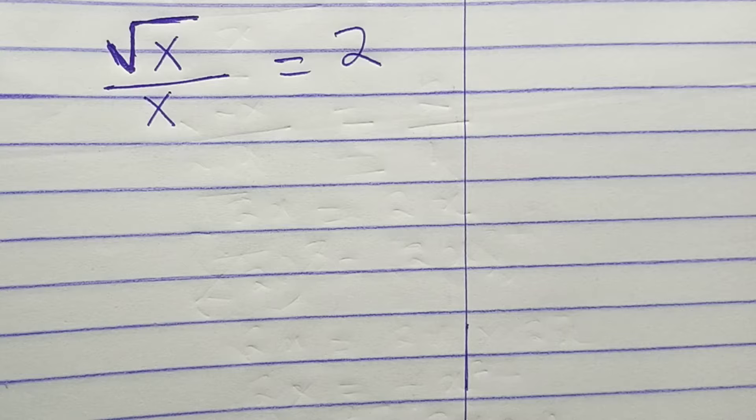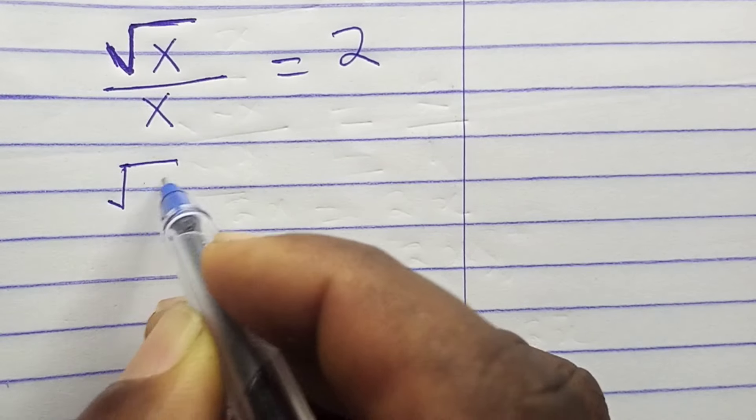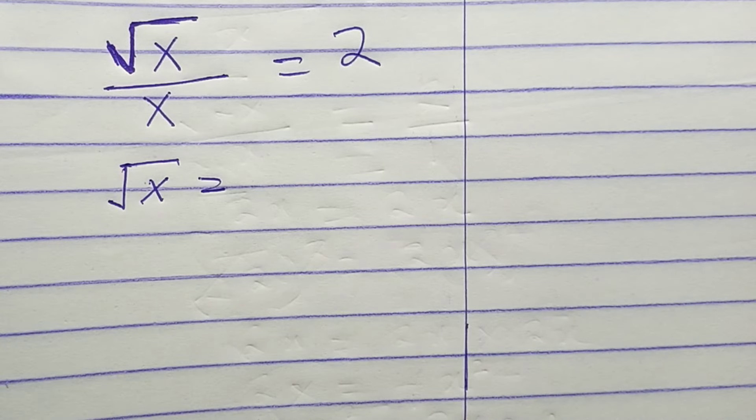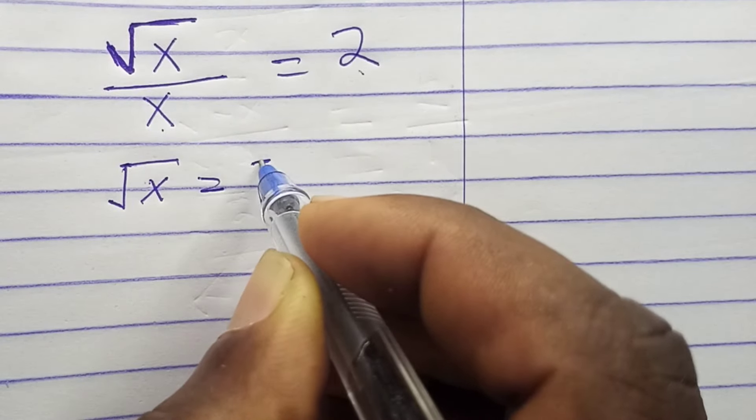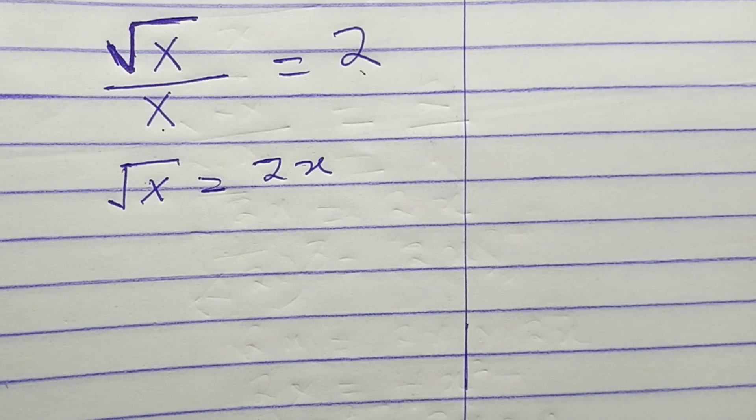We can have root x equals x times 2, which is 2x. So square both sides, you're going to have...